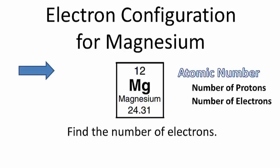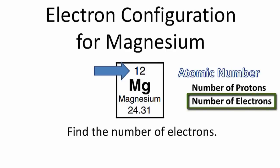The first step in writing the electron configuration for magnesium is to figure out how many electrons there are in the magnesium atom. We can do that by looking at the periodic table and finding magnesium. Above the element symbol, we'll see the atomic number. The atomic number tells us the number of protons, but it also tells us the number of electrons.